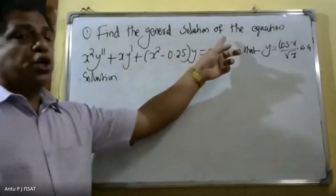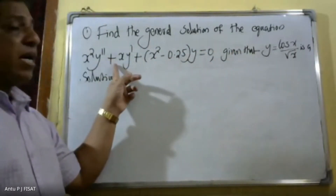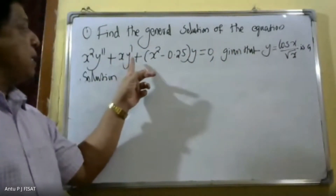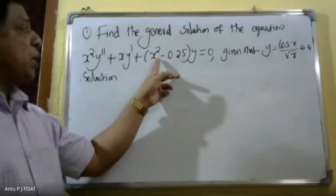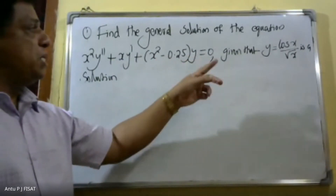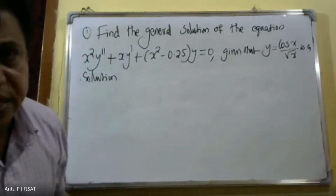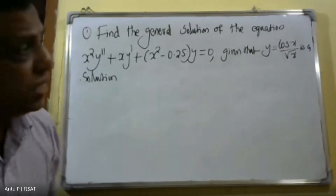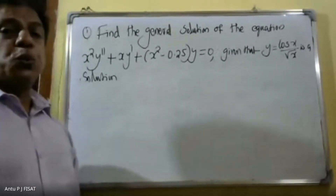Find the general solution of the equation x² y'' + xy' + (x² - 0.25)y = 0, given that y = cos(x)/√x is a solution.